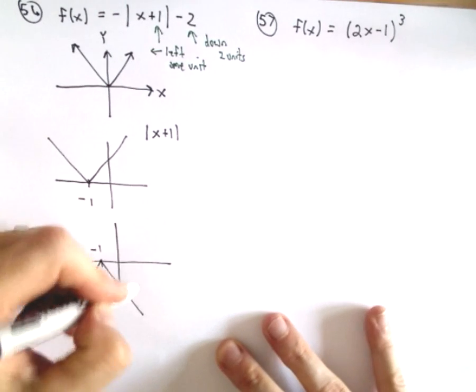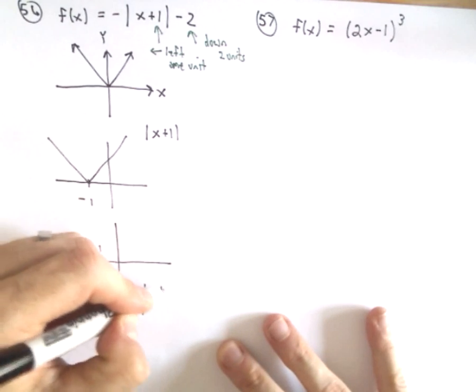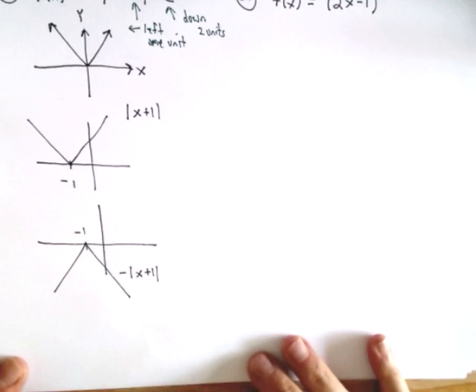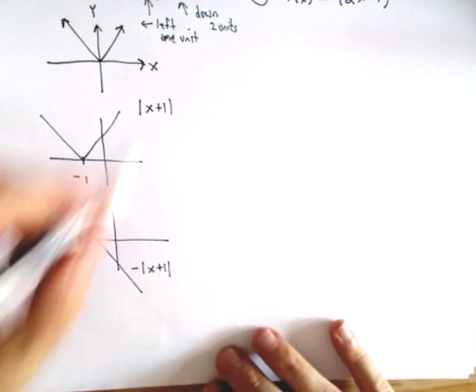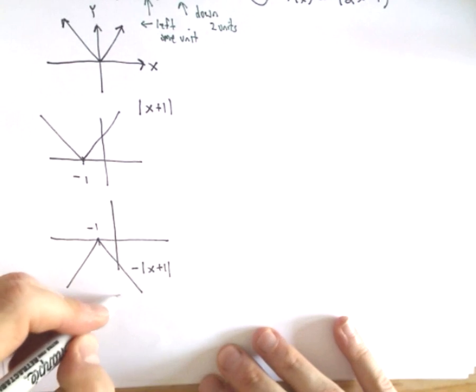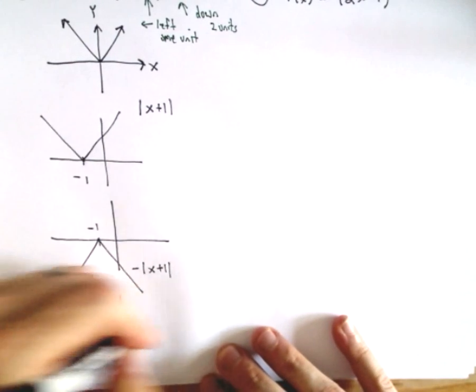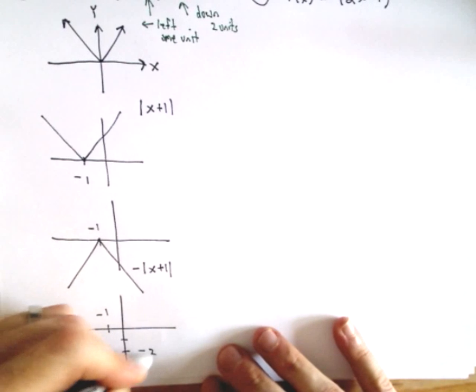So there's -|x+1|. And the last thing that we would need to do, once we just tack on the -2, that's going to move the graph down two units. So there's -1, -1, -2.